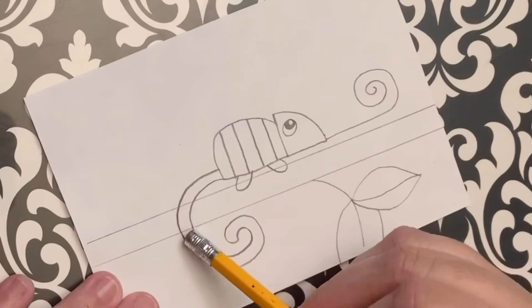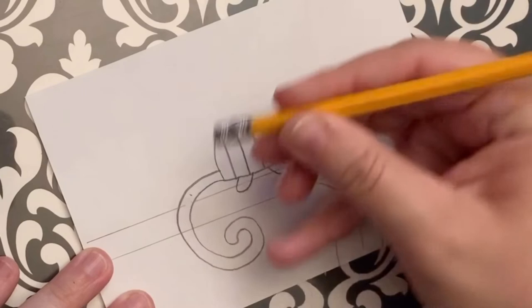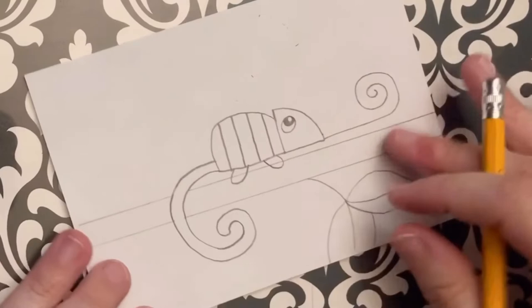Now you'll notice that the tail has gone through the branch. So I want to erase those branch lines that you can still see to get him out of the way. We want those to look like they're in the background.